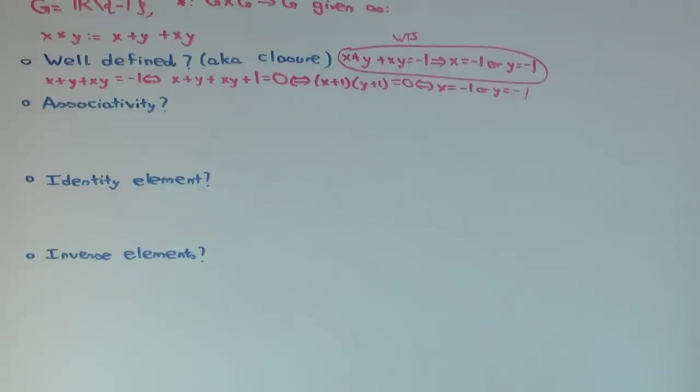Okay, associativity. Can you check associativity for all x, y, z? Would that be practical? You obviously cannot plug in all triples of real numbers, because there's infinitely many of them. So what do you do? How do you check associativity? You use the definition. You just use the algebraic definition and you try to formally simplify it.